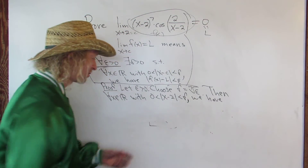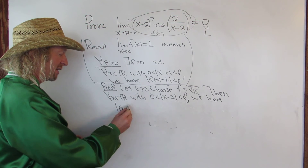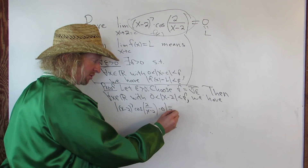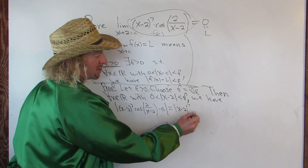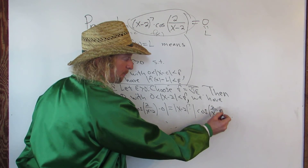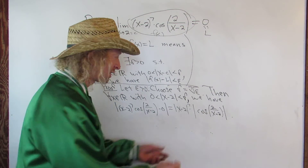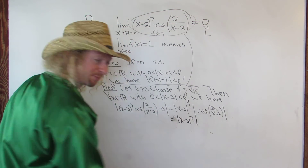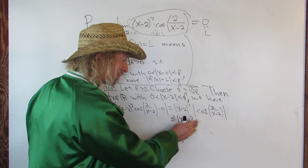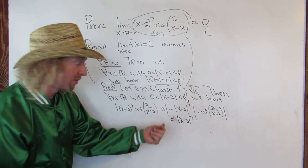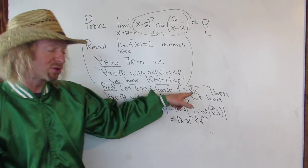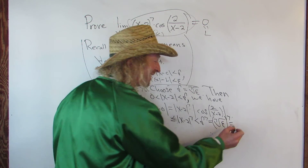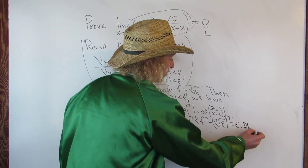We have: absolute value of x minus 2 to the 7th times cosine of 2 over x minus 2, minus 0. This equals the absolute value of x minus 2 to the 7th times the absolute value of cosine of 2 over x minus 2, which is less than or equal to x minus 2 to the 7th times 1 — we don't need the 1. And this is less than delta to the 7th, but delta equals the 7th root of epsilon, so this equals the 7th root of epsilon to the 7th, which is epsilon. That completes the proof. Thanks for watching.